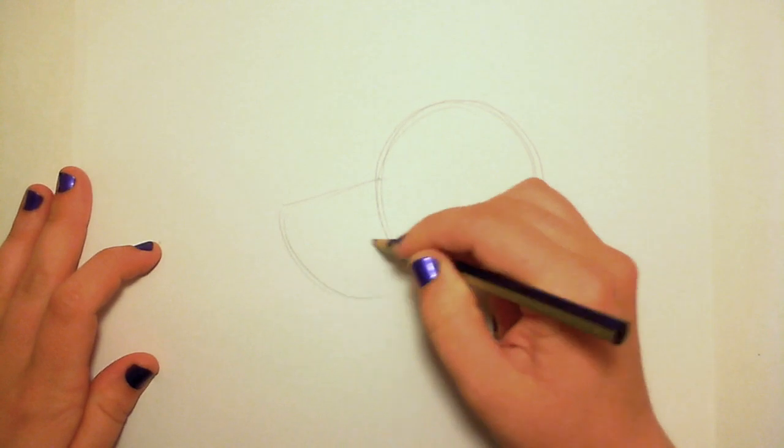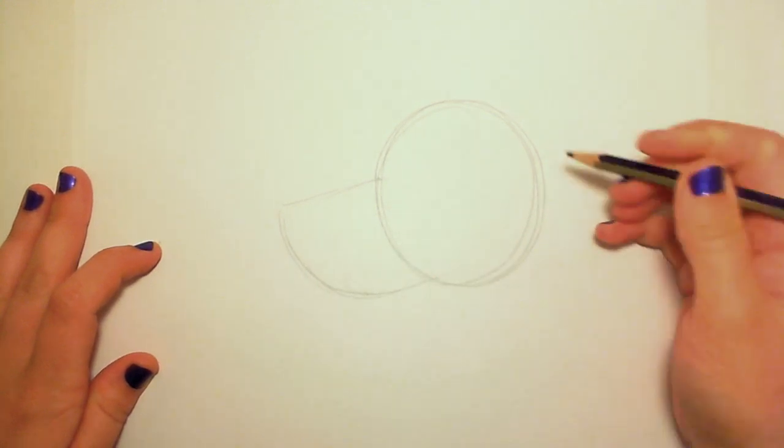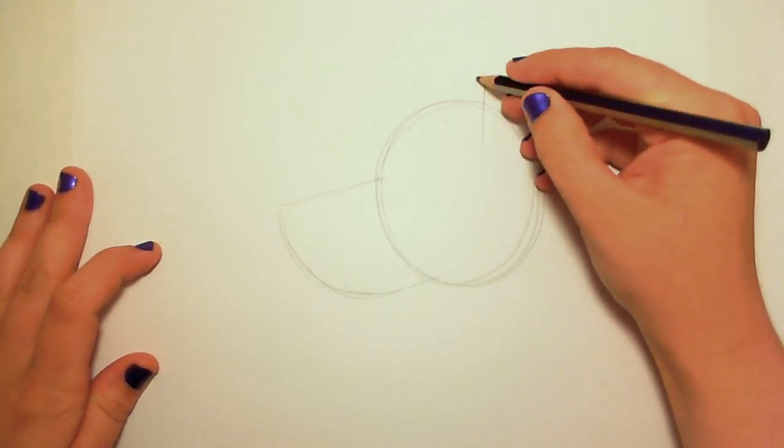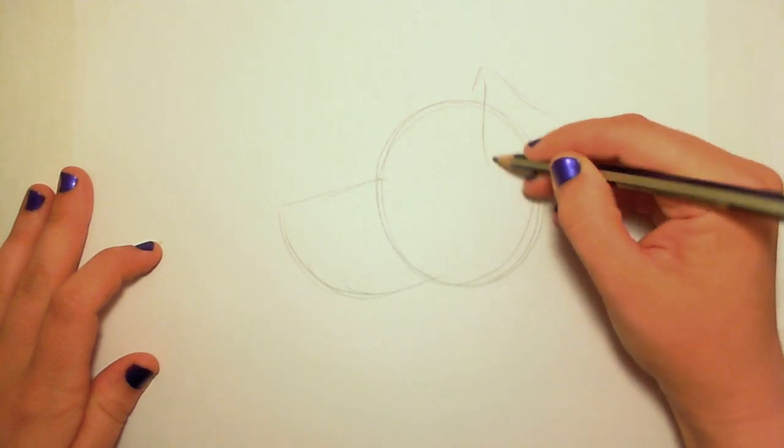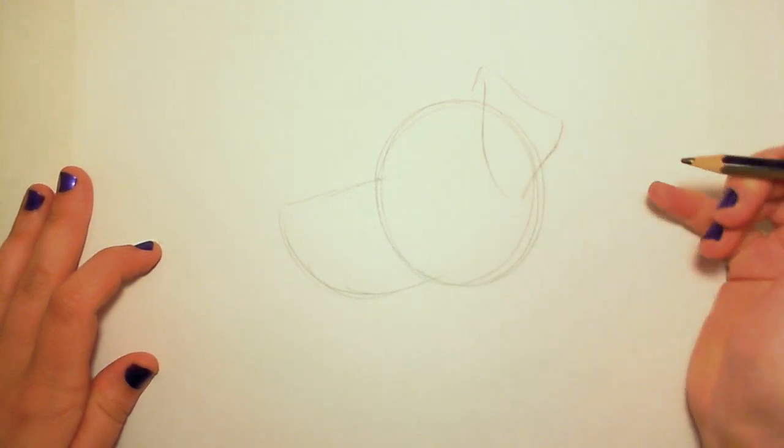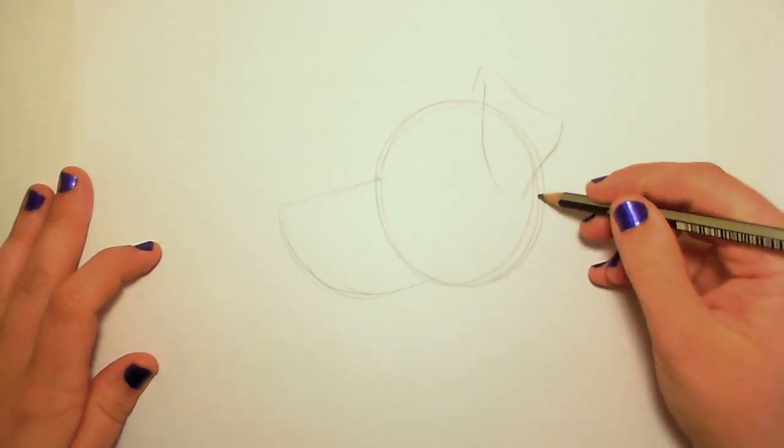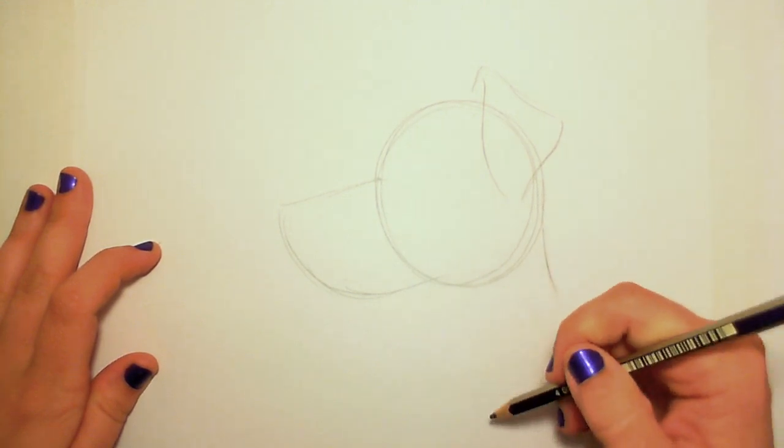So as you can see, just one circle, really loose and fast, and then the muzzle, and now just a kind of floppy triangle shape, that's the ear, and already you can see that this is a dog that we're drawing.